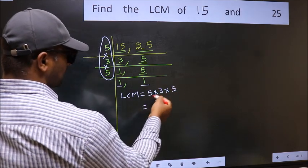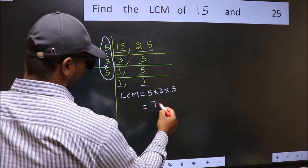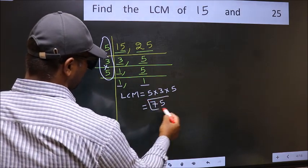When we multiply these numbers, we get 75. 75 is our LCM.